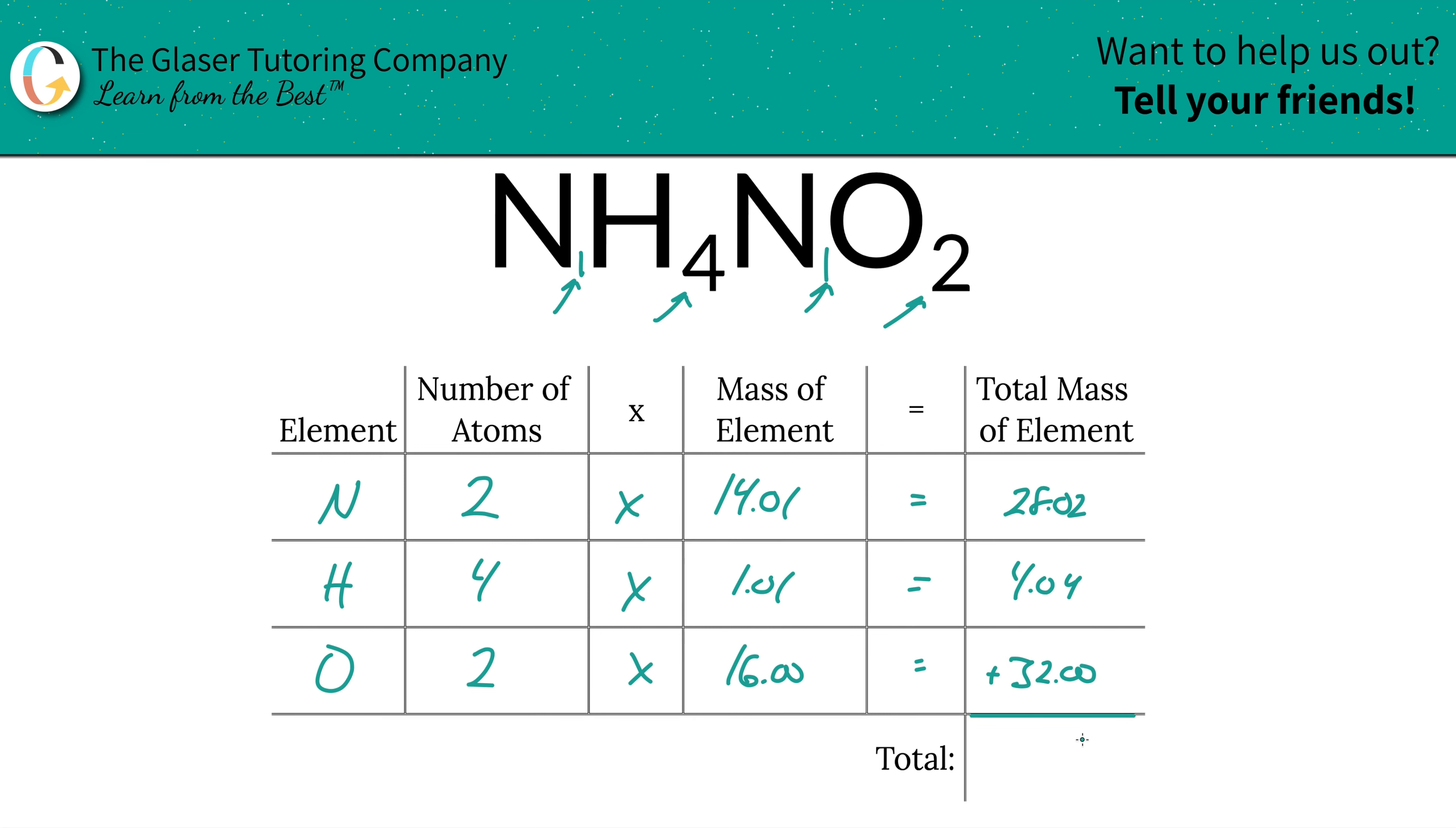Then to find the total, add it all up. Add up all these total masses, and the total mass then will be 64.06 grams per mole, that is, because we're finding the molar mass.